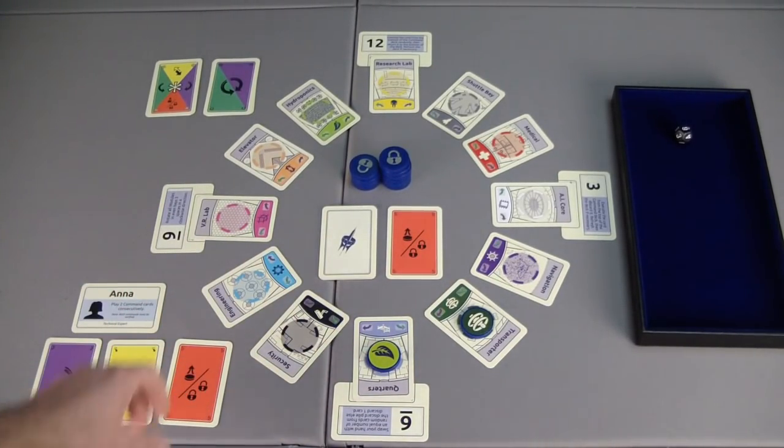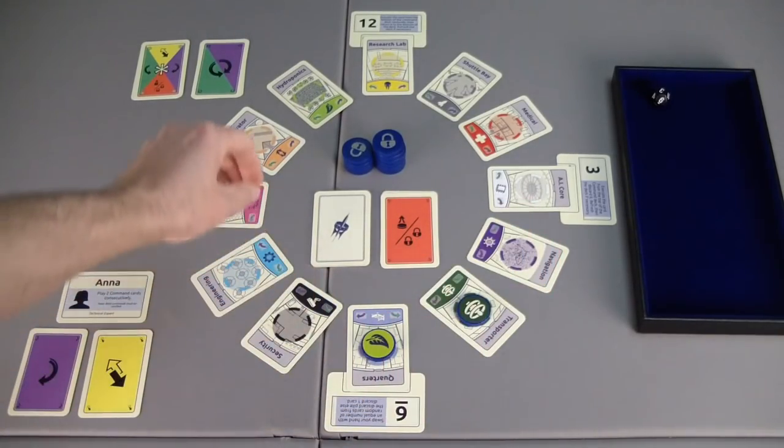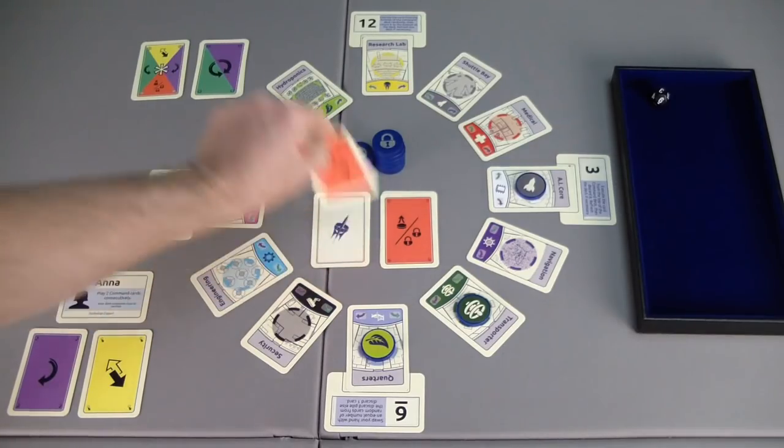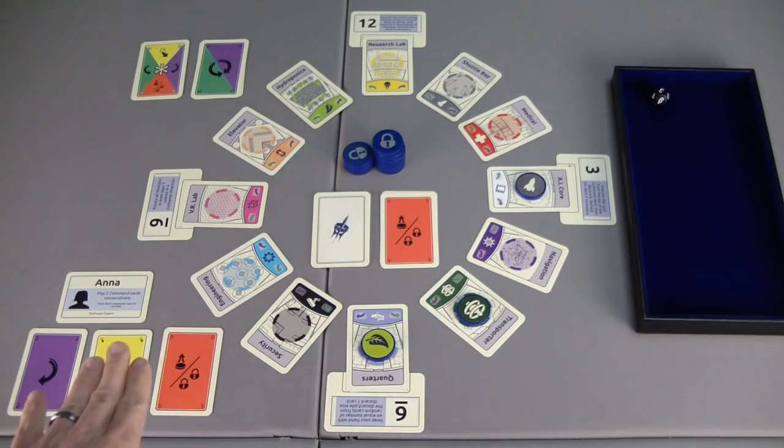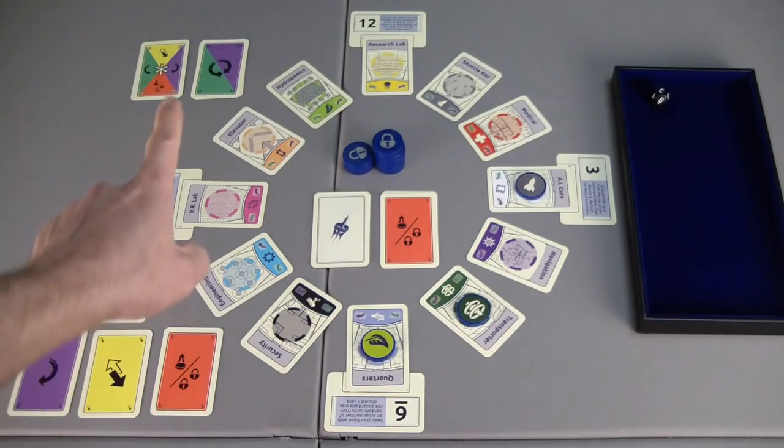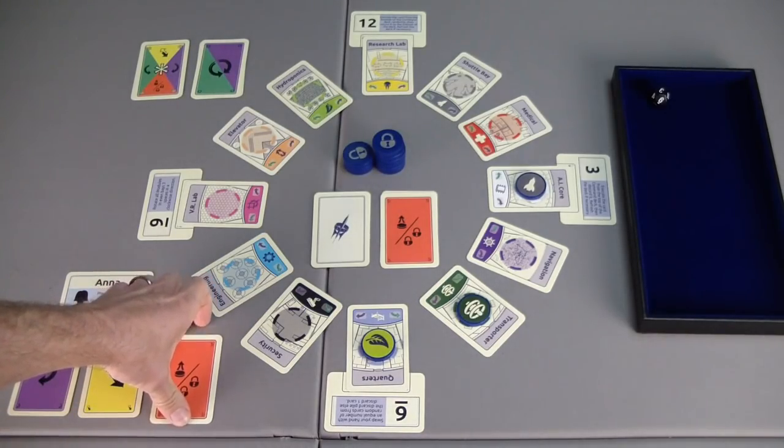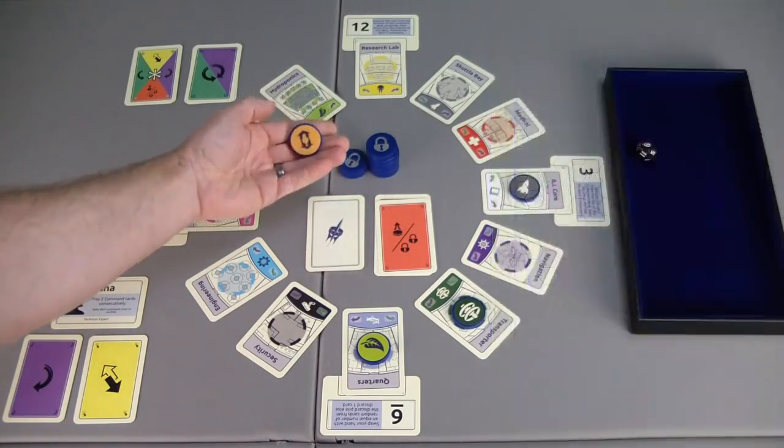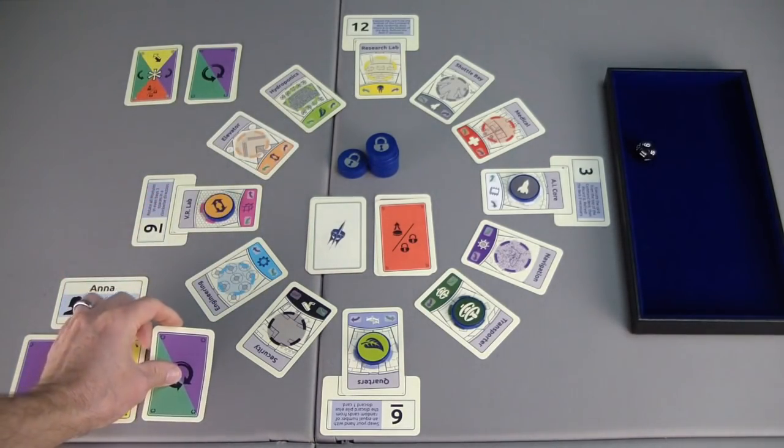I try not to use the lock portion of the card until I have two things I can lock down to be a little bit more efficient. And we can't forget that Anna has the play two command cards consecutive ability and that is a one-time use per game. Normally we can only play one, discard it, draw the next. With that ability we'd be able to play two back to back. So for now I will deploy another module which will go to bay number three. Bay number three is over here at the AI core and we're going to get the symbol for the shuttle bay. Draw another card and it's another deploy lock card, which there are six of these red deploy lock cards in the command deck along with two of the swap cards, one of the clockwise rotate cards, and one either rotate.